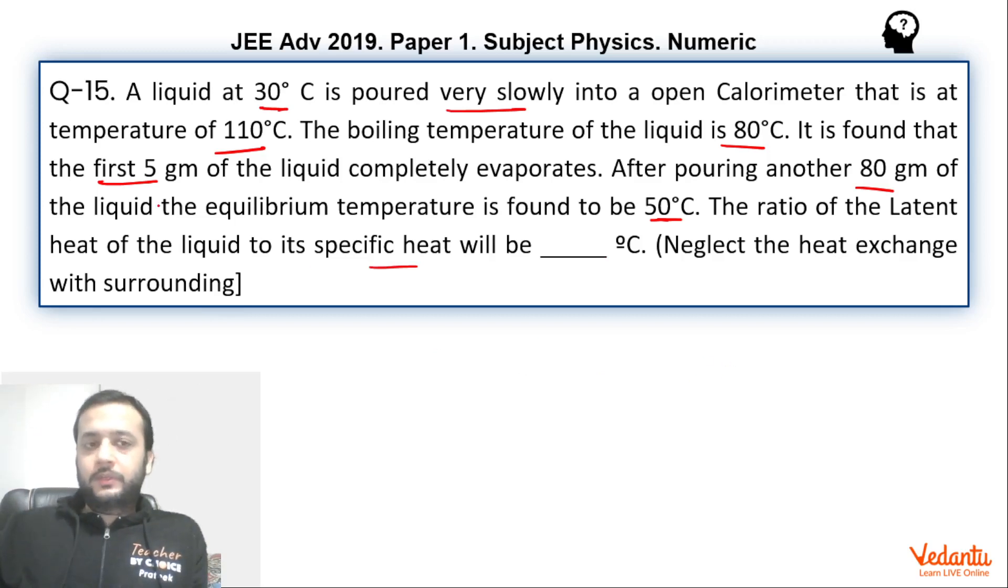Now if you look carefully, it is said that first 5 grams of the liquid evaporates. That means the liquid was initially at 30 degrees celsius. It must have come to 80 degrees celsius and then it would have evaporated.